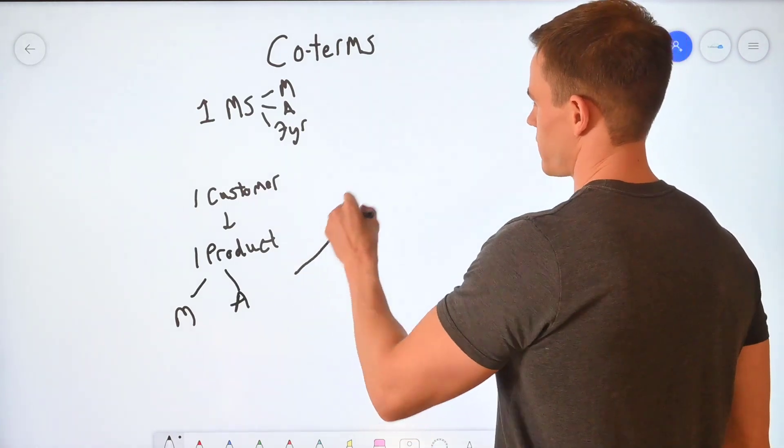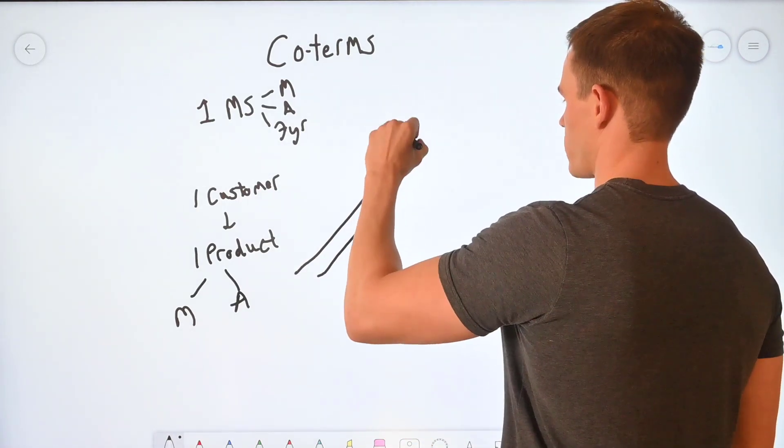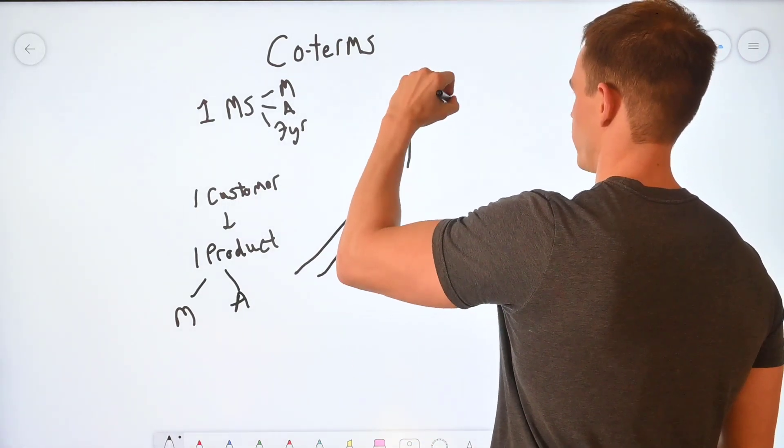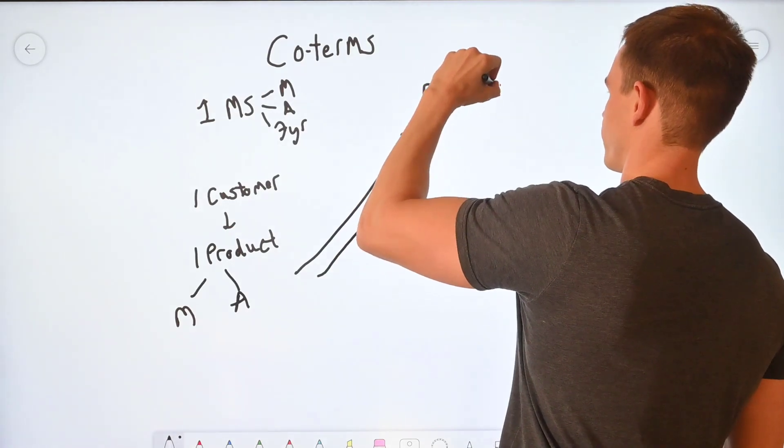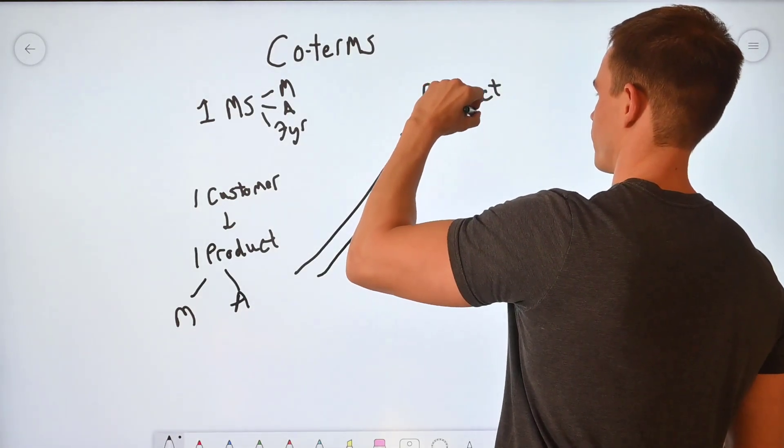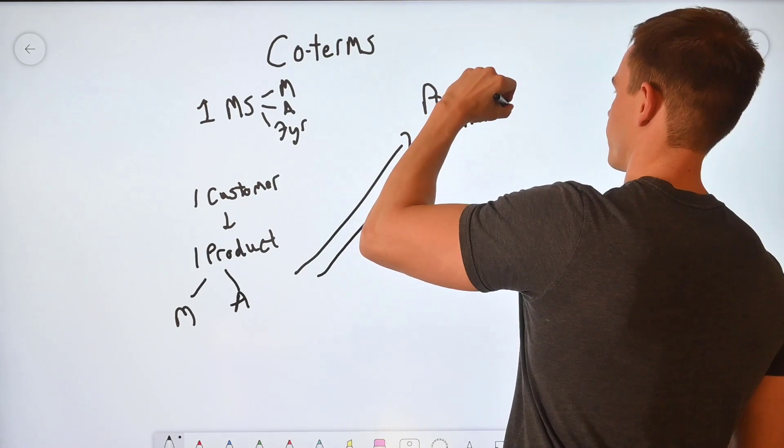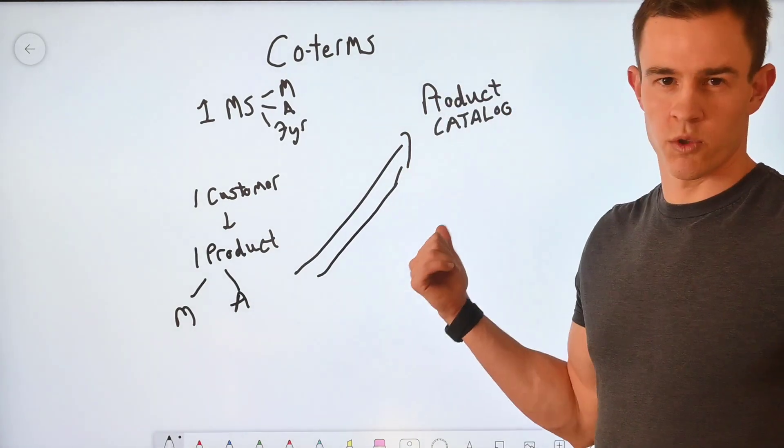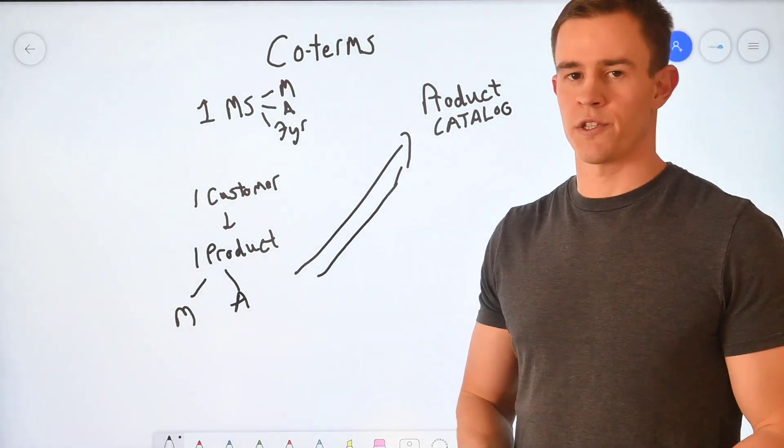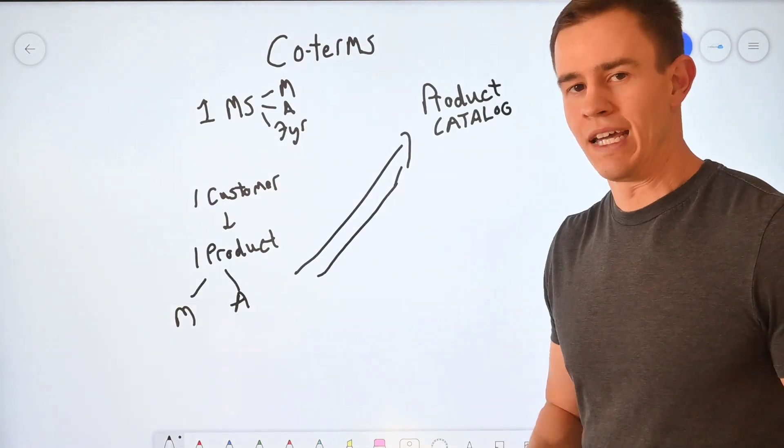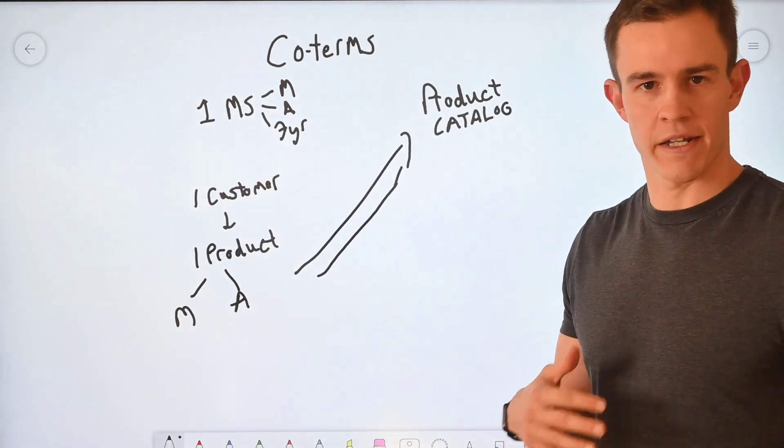What this means though for PSA tools is that essentially within your product catalog, you're going to be creating multiple products per commitment term that you're going to support in your environment, mostly because of the variance in rate plans.